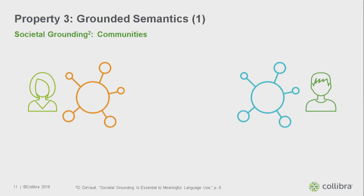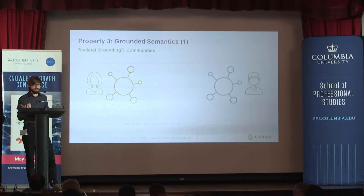The third property — one I like to talk about because of my cognitive science background — is the idea of grounded semantics. We all know that a label in a graph has utterly no meaning if it has no reference to something in the world or to a description we all agree on. I can put a label on a graph that says 'banana,' but if it has no reference to something real in the world that is a banana, it has no semantic meaning.